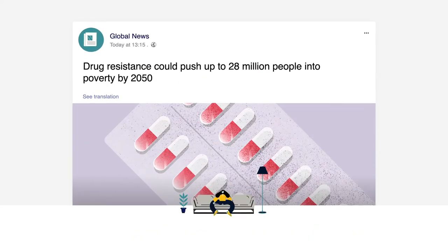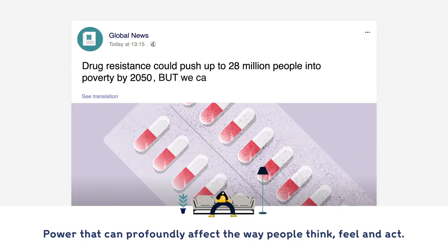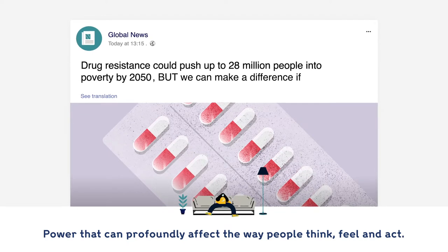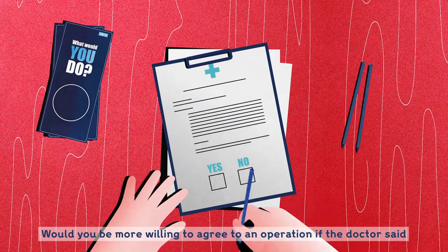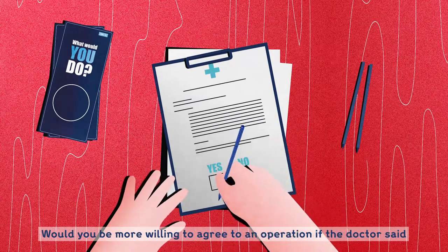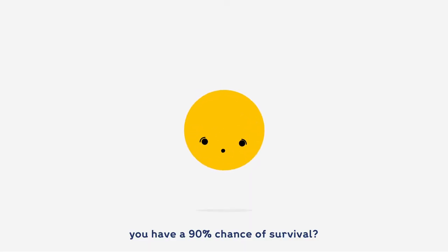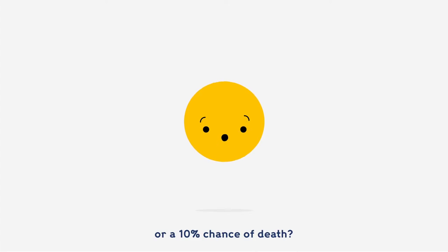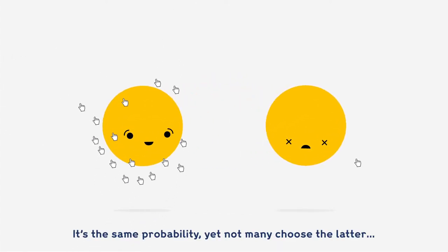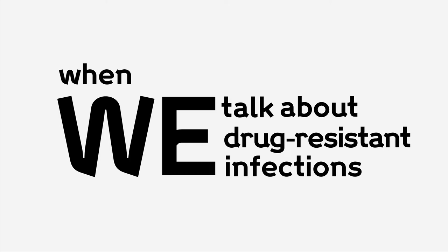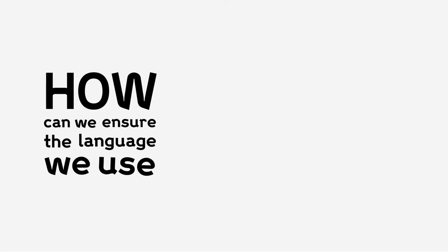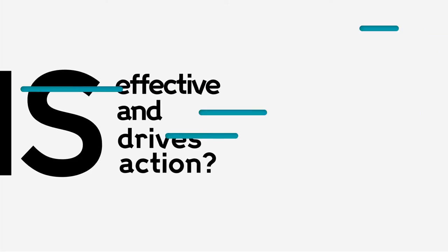There's a lot of power in the way we use language — power that can profoundly affect the way people think, feel and act. Take this example: would you be more willing to agree to an operation if the doctor said you have a 90% chance of survival, or a 10% chance of death? It's the same probability, yet not many choose the latter. So the question becomes: when we talk about drug-resistant infections, how can we ensure the language we use is effective and drives action?